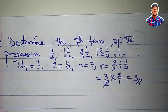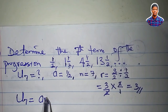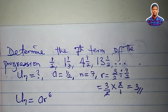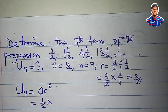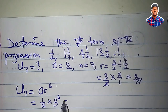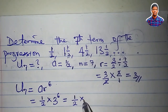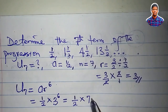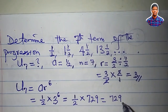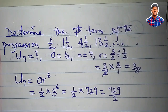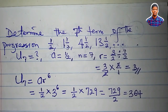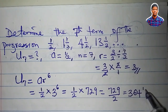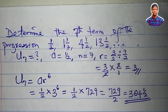Now let's calculate u_7. u_7 = a · r^(n−1) = (1/2) × 3^6. Since 3^6 = 729, we have 729/2. This is an improper fraction, so breaking it down: 729 divided by 2 is 364 remainder 1, giving us 364 and 1/2. So the 7th term of the progression is 364½.